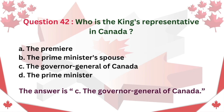Question 42. Who is the king's representative in Canada? A. The Premier B. The Prime Minister's spouse C. The Governor General of Canada D. The Prime Minister. The answer is C. The Governor General of Canada.